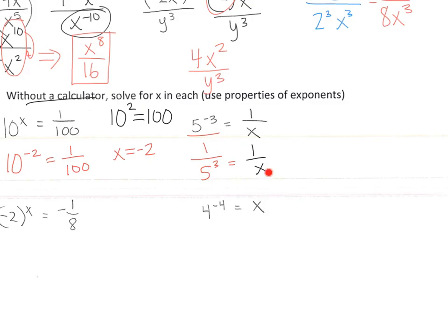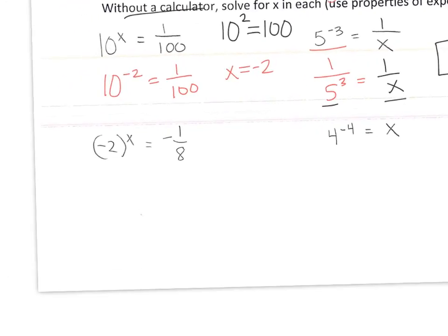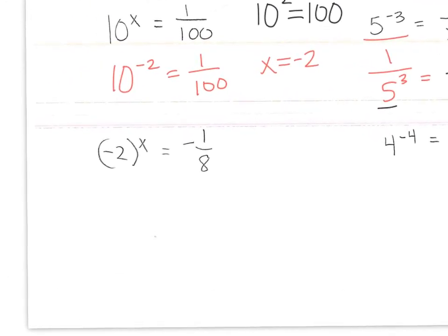In the second one, I can write 5 to the negative 3 as 1 over 5 cubed. So 1 over 5 cubed has to equal 1 over x. Since the numerators are the same, the denominators have to be the same, so 5 cubed has to equal x. Therefore x equals 125.